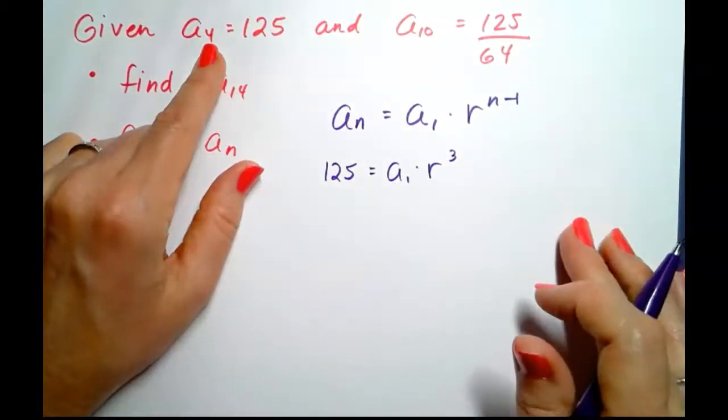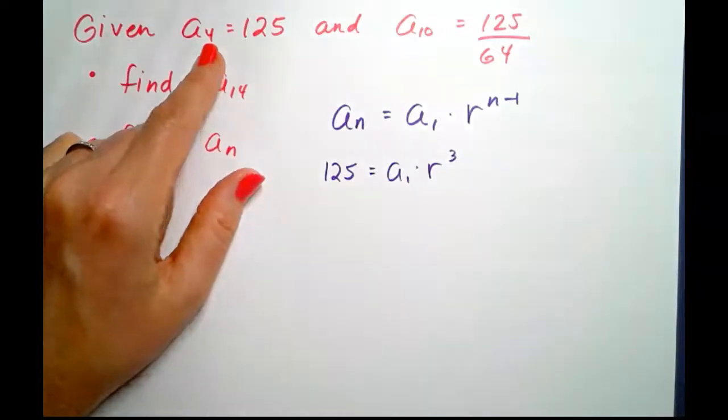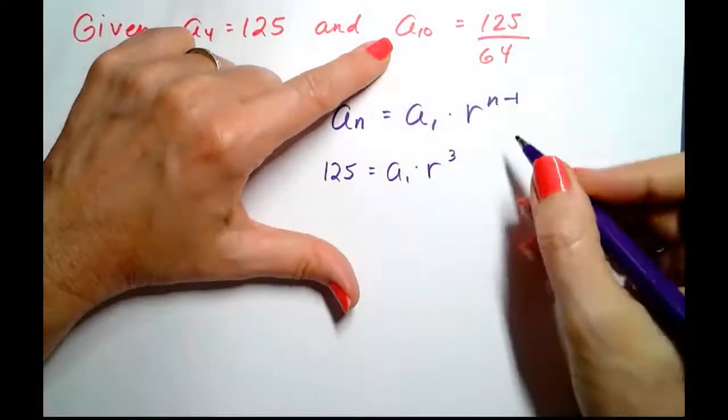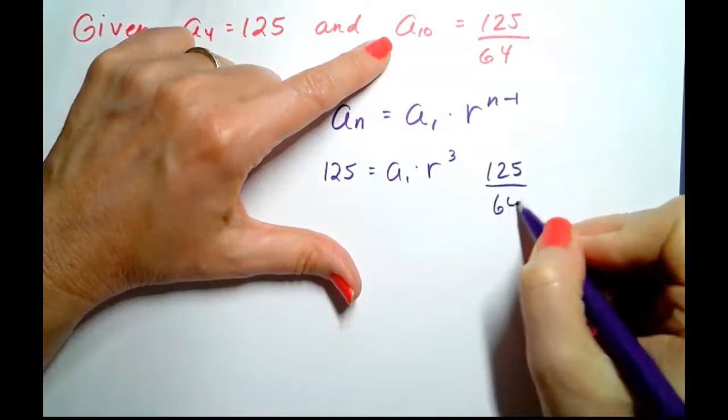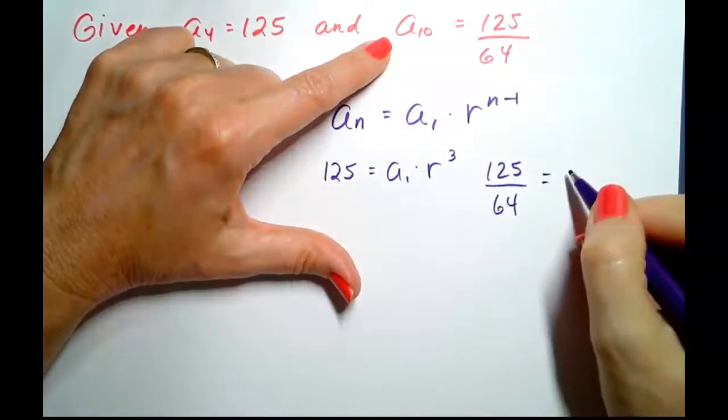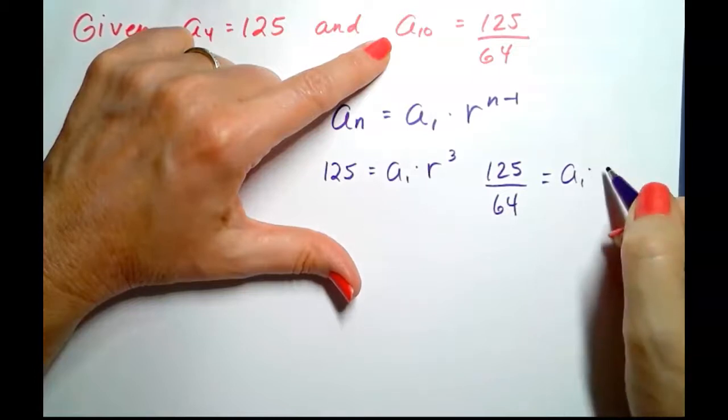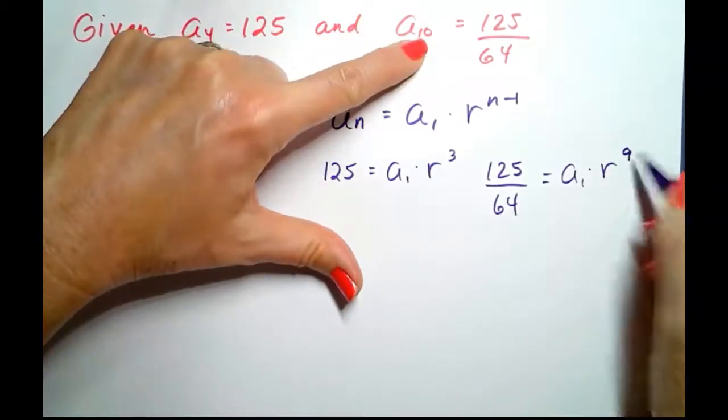One equation, two unknowns, therefore we need a second equation. So let's go to a sub 10. A sub 10 is 125 over 64. That's equal to a sub 1 times r to the 10 minus 1, which is 9.